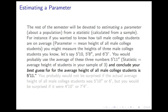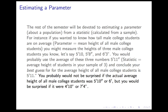Your best guess, based on that data, of what the average height of all male college students is, would be 5'11". How confident can you be in that? It wouldn't surprise you if the actual average height was 5'10" or 6', but it would surprise you if it were 4'10" or 7'4". That estimate, 5'11", gives you a range of plausible values. We want to figure out what a reasonable range of plausible values is, based on the sample.